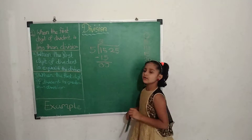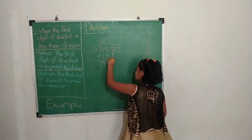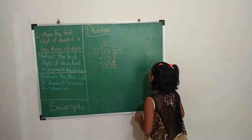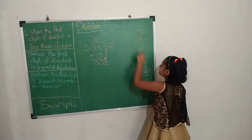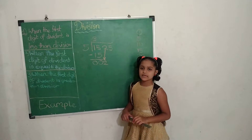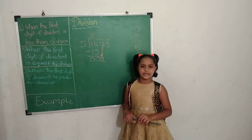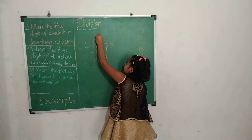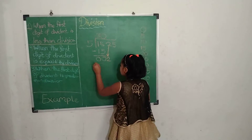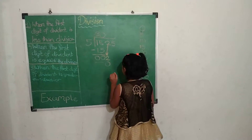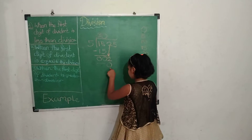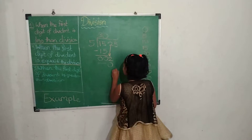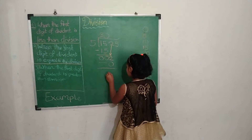Now we bring down the next two digits. In the table of 5, 5 is bigger than 2, so we take 5 zeros are 0. We write 0 in the quotient and 0 below, then subtract: 2 minus 0 equals 2.